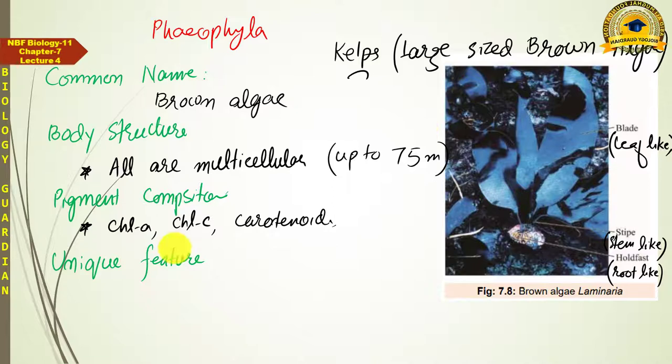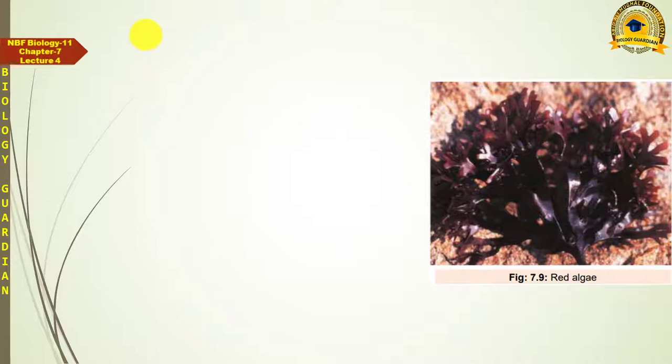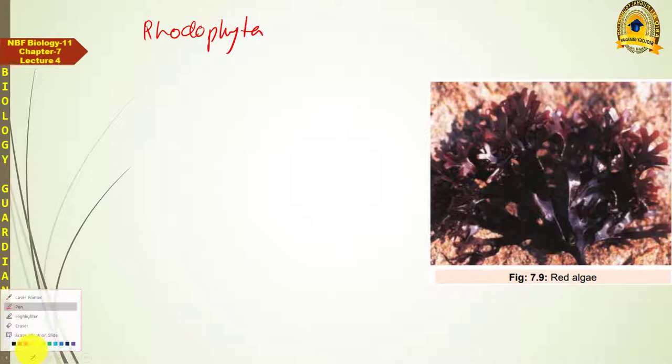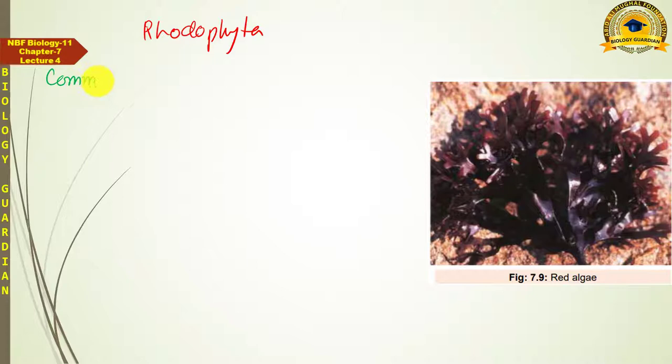After Phaeophyta (Brown algae), the next group is Red algae, scientifically called Rhodophyta. Their common name is Red algae.